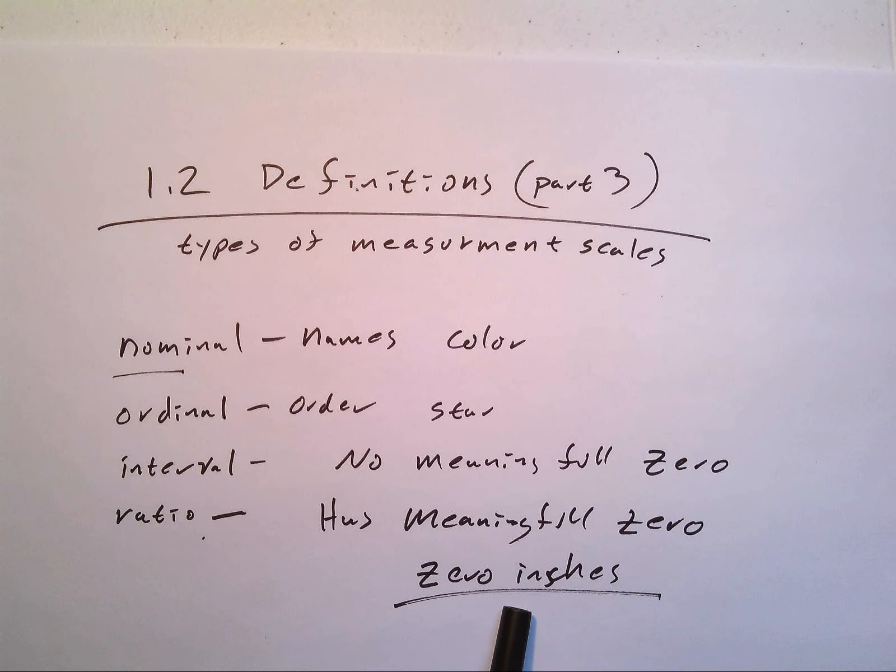Zero doesn't really exist because you can go below whatever your zero is set to. Think about the difference between Celsius and Fahrenheit. You have 32 versus zero degrees, both mean water freezes, and you can go above that or below that. Doesn't mean a thing. Now ratio has a meaningful zero.